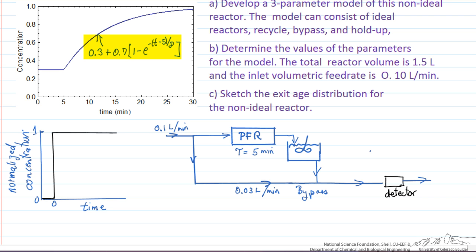And then the exponential term, notice that we have T minus 5, that's accounting for the delay due to the plug flow reactor. 8 then is the residence time, and tau for the CSTR is 8 minutes.